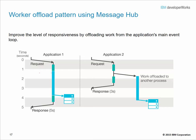Let's look at the Worker Offload pattern using MessageHub. The Worker Offload allows you to improve responsiveness by offloading long-running tasks from the application's main event loop. As shown on the left, the application doing all the work inline results in a fairly slow response time. On the right, the long-running portion is offloaded to a worker process, and the response time has improved.